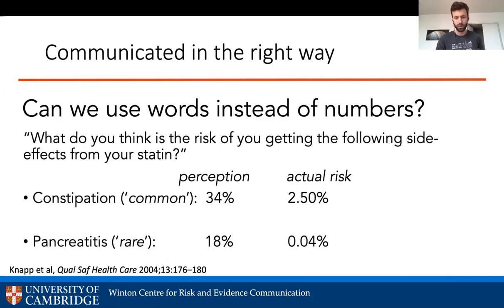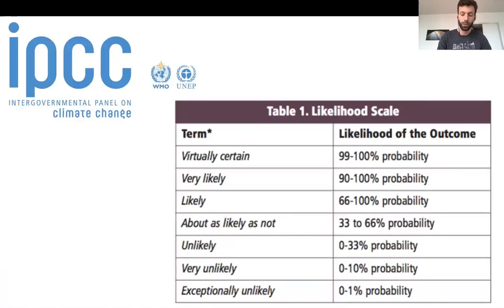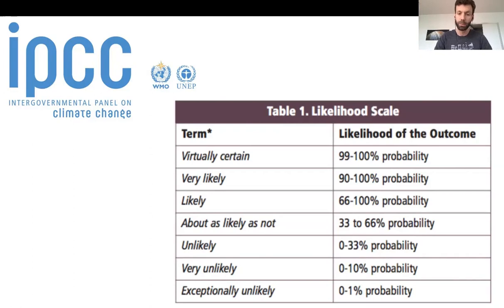This came up in one of the Gulf Wars, when the CIA said weapons of mass destruction were 'likely' — and that word was very misunderstood by policymakers. The point is: words like 'common' or 'rare' must be tested with your population if you want to use them to communicate quantitative information. The IPCC panel on climate change did a lot of research to map their terms onto probabilities, and although there's still some discrepancy, they've done a good job ensuring words are understood roughly as intended.